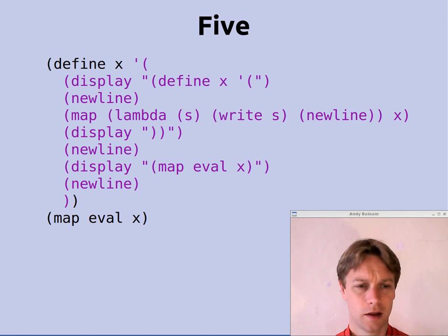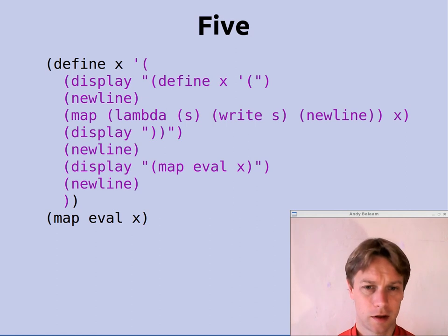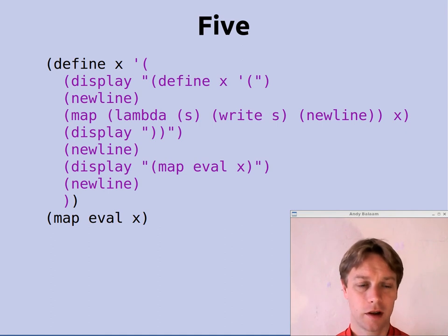So let's look back at the complicated bit, which is this map lambda S, write S, new line X. So basically what that says is, map means run this function for every line of this thing. So the thing that it's running it for is X, and the function that it's going to run is this lambda S, write S, new line. So basically what that says is, for every line in X, write out that line, and then write a new line.